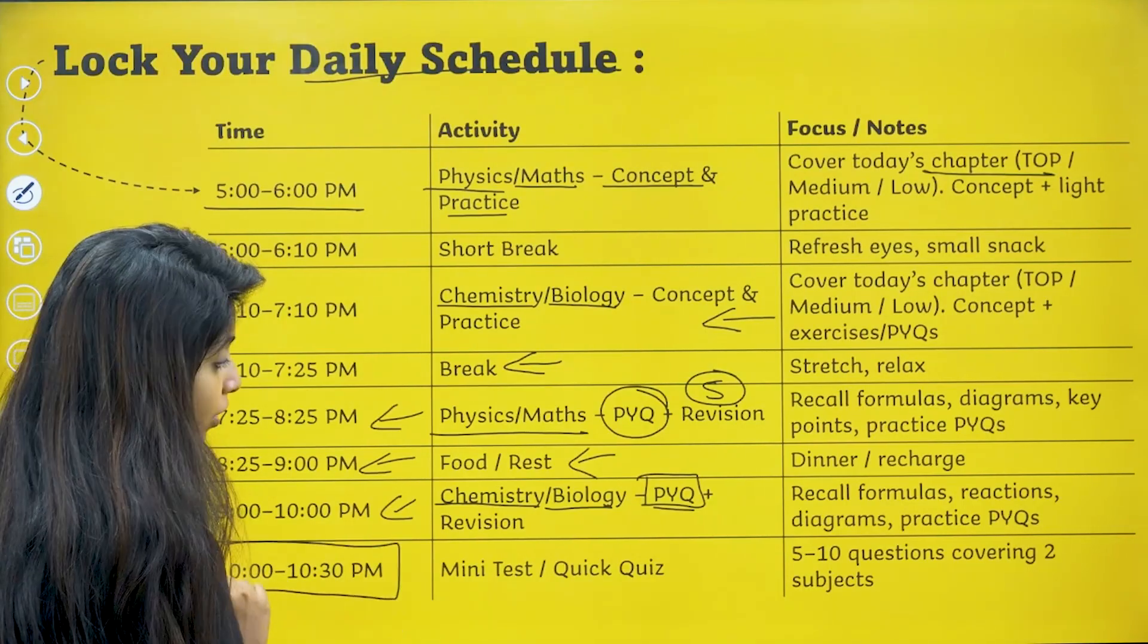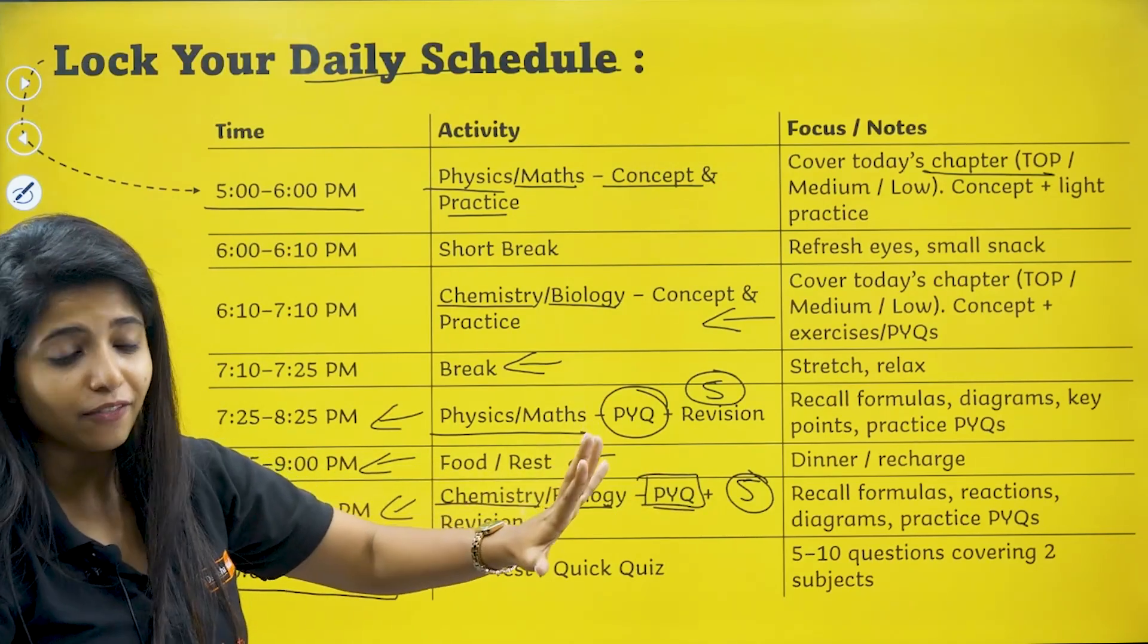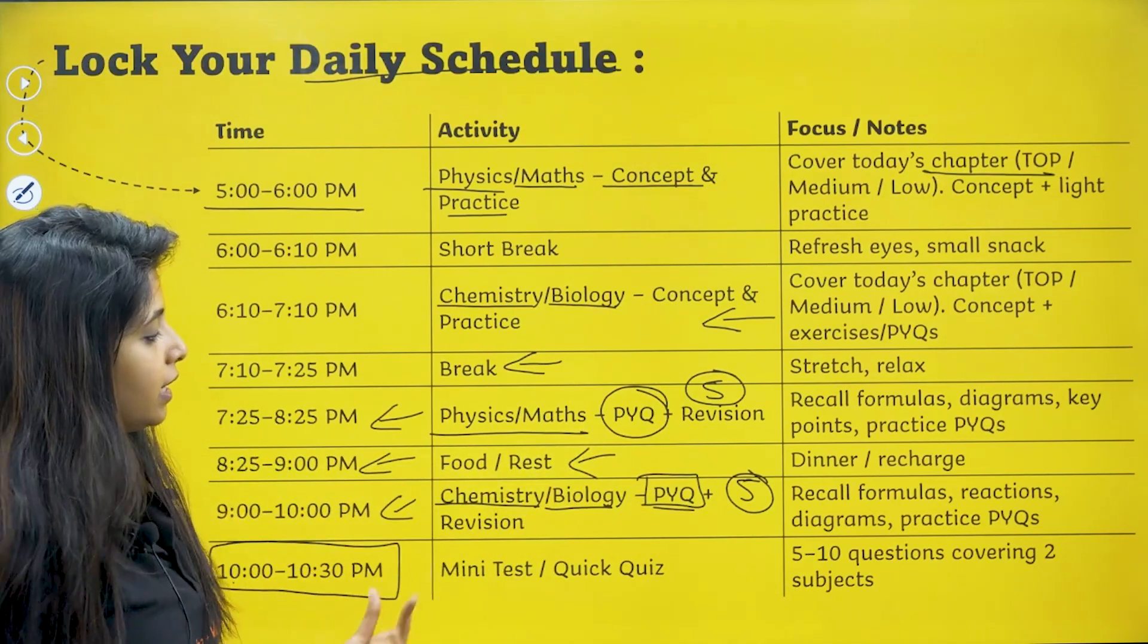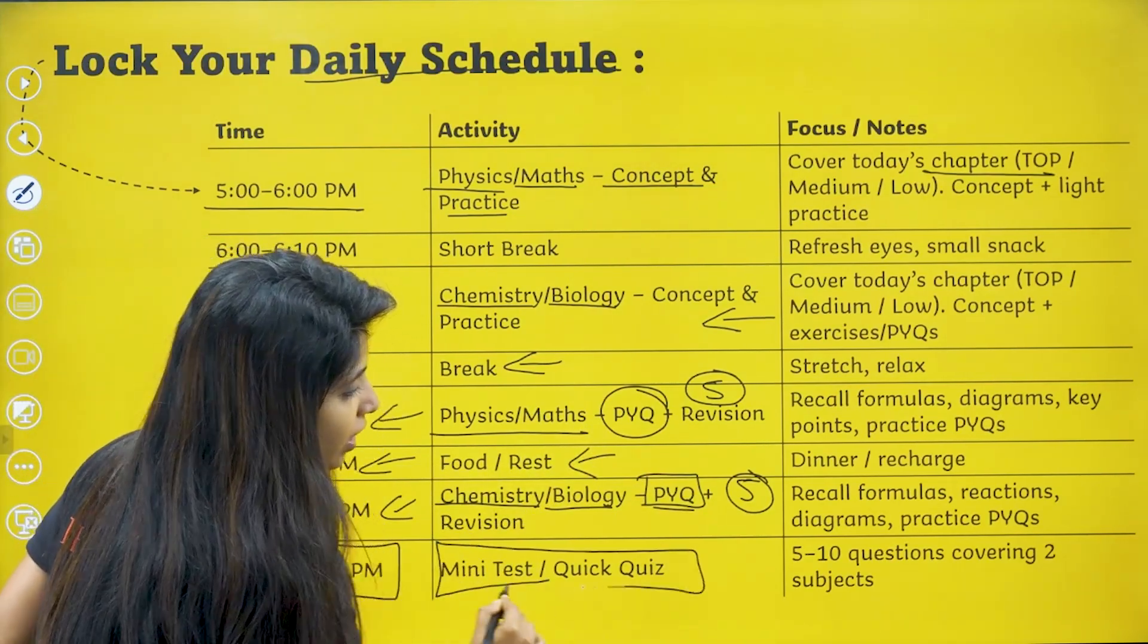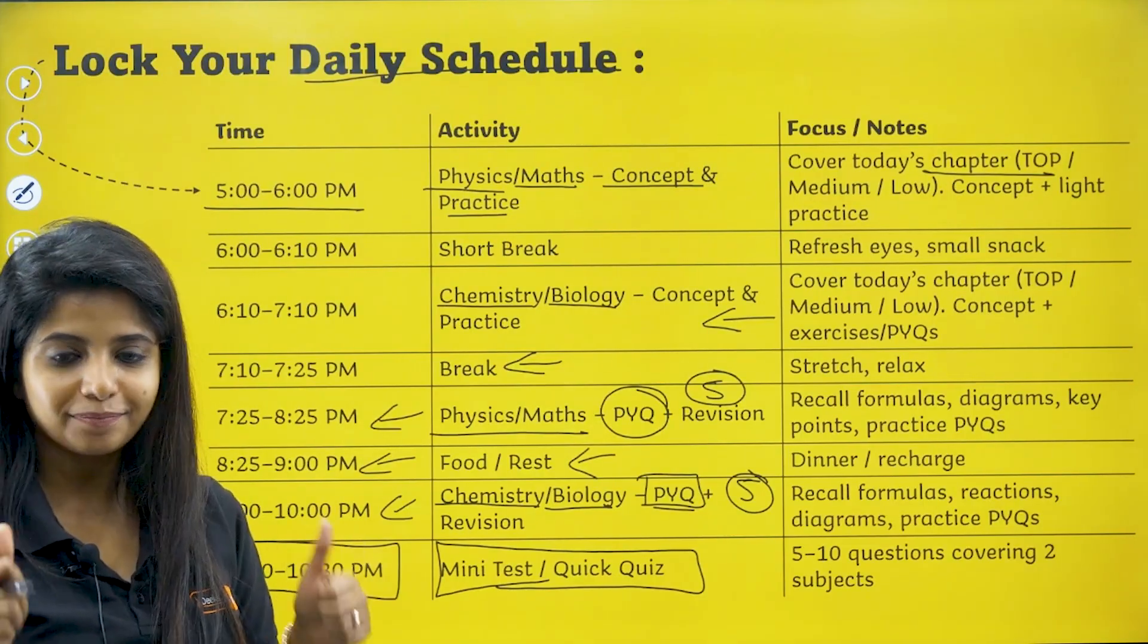Now from 10 to 10:30, over here also when you practice questions, mark five questions. So five plus five, 10 questions I have. From 10 to 10:30, I am going to take a mini test where I am going to solve these questions covering both the subjects together. And in that way I have an understanding that I am able to answer the question or not. And that gives you instant confidence, my dear children.